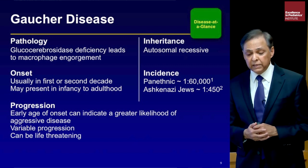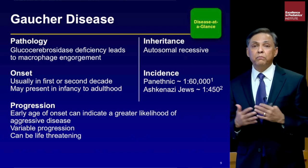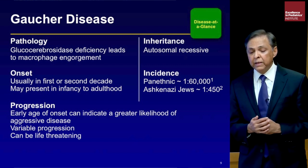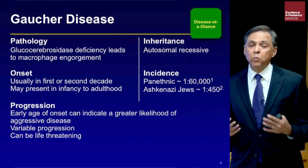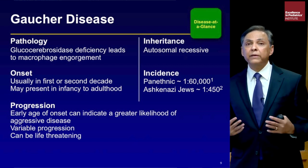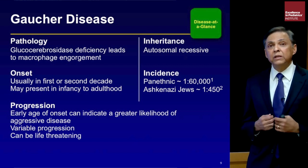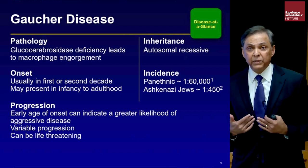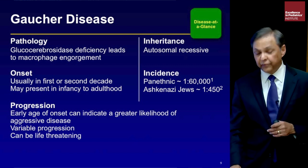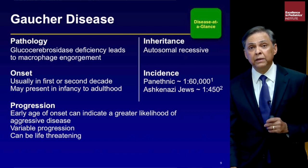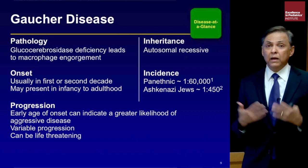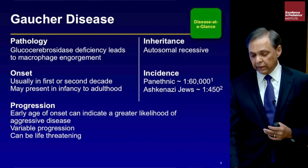Gaucher disease is autosomal recessive — you need mutations on both alleles of the enzyme gene. It is present in every ethnicity. The overall population frequency is one in 40,000, but among Ashkenazi Jewish people it is extremely common, occurring in as many as one in 450 individuals. For the New York tri-state area, this is a very important disease.